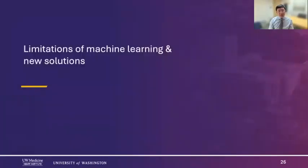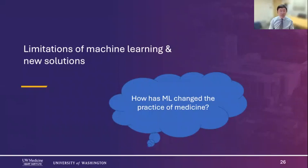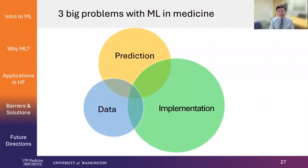What are some of the limitations of machine learning and state-of-the-art solutions? Right now there are a lot of machine learning applications in research, but how has machine learning changed the practice of medicine? To be honest, right now it really hasn't changed very much. As I see it, there are three big problems: a problem with prediction, a data problem, and probably the biggest problem — an implementation problem.